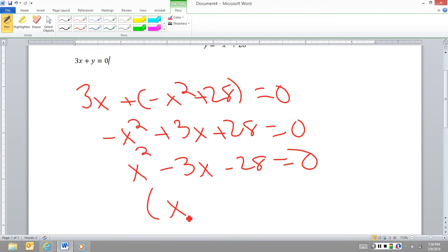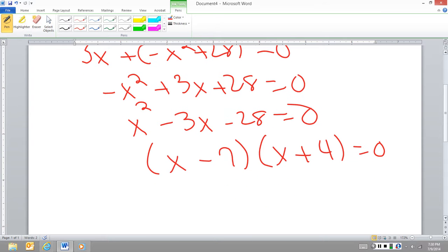And then I'm going to factor x minus 7 times x plus 4. And so my answers are 7 and negative 4.